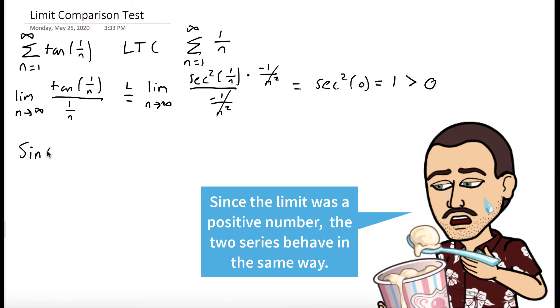And so since this limit is greater than 0, the limit comparison test says that our series behaves the exact same way as the harmonic series, which diverges. So we could conclude that the sum from n equals 1 to infinity of tangent of 1 over n is a divergent series.